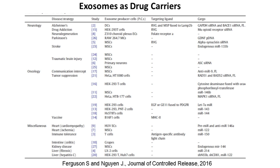Many groups have started to use exosomes as delivery vehicles for different types of cargos, as you can see on this table. This one specifically focuses on the delivery of RNA, pre-microRNA, and siRNA. The applications range from neurological diseases to cancer and tissue regeneration, including ischemic heart diseases and brain diseases. Different types of cells are used as donors, including human embryonic kidney cells (HEK-293T cells), mesenchymal stem cells, and cancer cells.